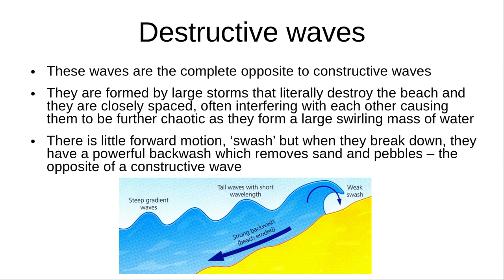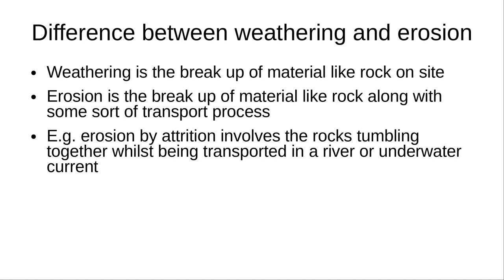There are also other coastal processes at play which shape the coast. A key difference to make sure you know is that weathering is just a breakup of material like rock on site, whereas erosion is a breakup of material like rock along with some sort of transport process.